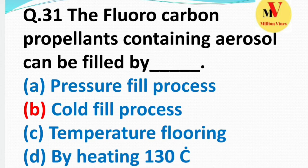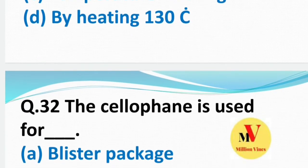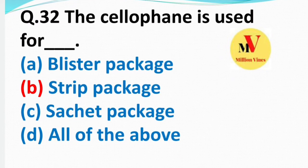Next question: The fluorocarbon propellant-containing aerosol can be filled by — the right answer is — cold fill process. Next question: The cellophane is used for — the right answer is B — blister packaging.